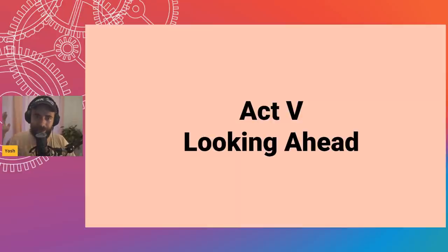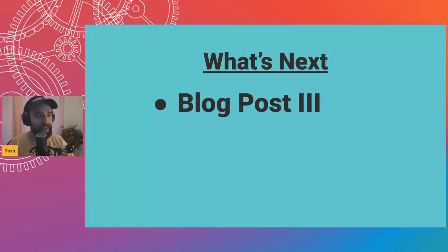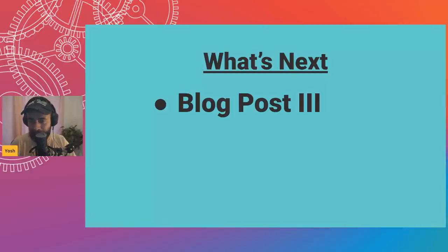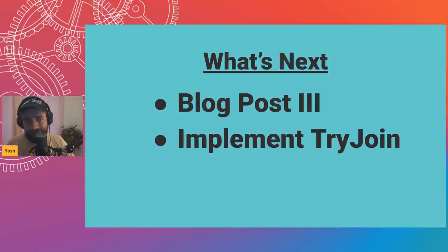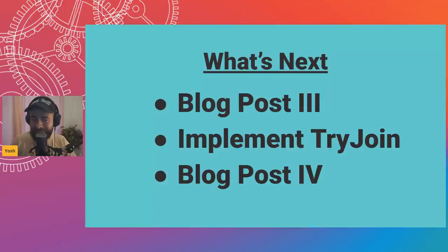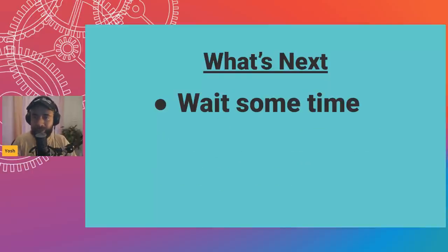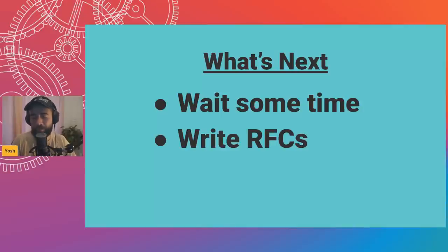Act five: looking ahead. What's next? I'm going to release a third blog post in the futures concurrency series covering the select-vs-merge content from today, to share with the working group. We need to implement try_join and try_race in the futures-concurrency library — that will surface design implications we may need to address at the language level, leading to a fourth blog post. After that, we'll digest everything, talk to folks, and if it all goes well, start writing RFCs to stabilize these things in the standard library.